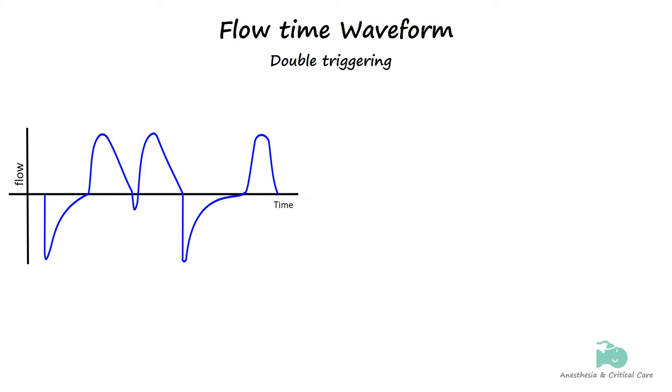Double triggering occurs when a ventilator detects two separate inspiratory efforts from the patient within a short time frame causing two distinct peaks in the flow-time waveform. To recognize double triggering on a flow-time waveform, you should look for two prominent peaks that appear close together in time. The flow-time waveform might show a noticeable irregularity or a change in the baseline between these peaks reflecting the ventilator's response to these multiple attempts at triggering a breath.